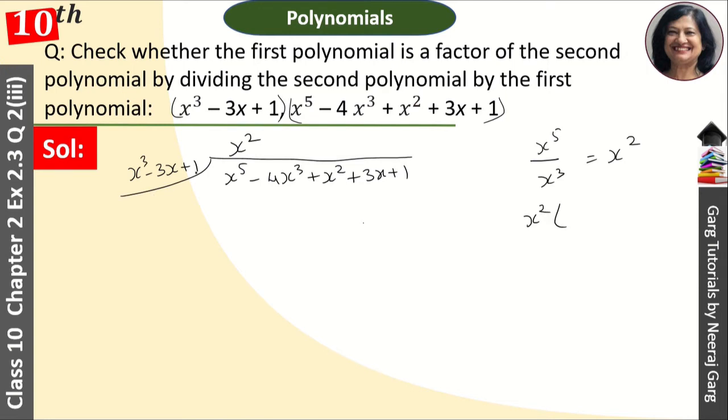We multiply x square with x cube minus 3x plus 1. So this is x to the power 5 minus 3x cube plus x square.